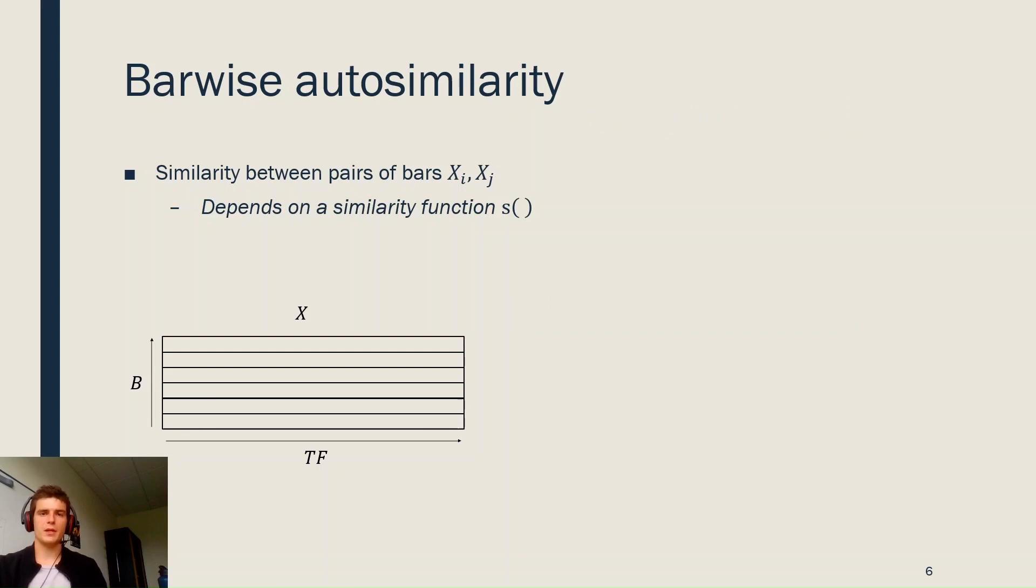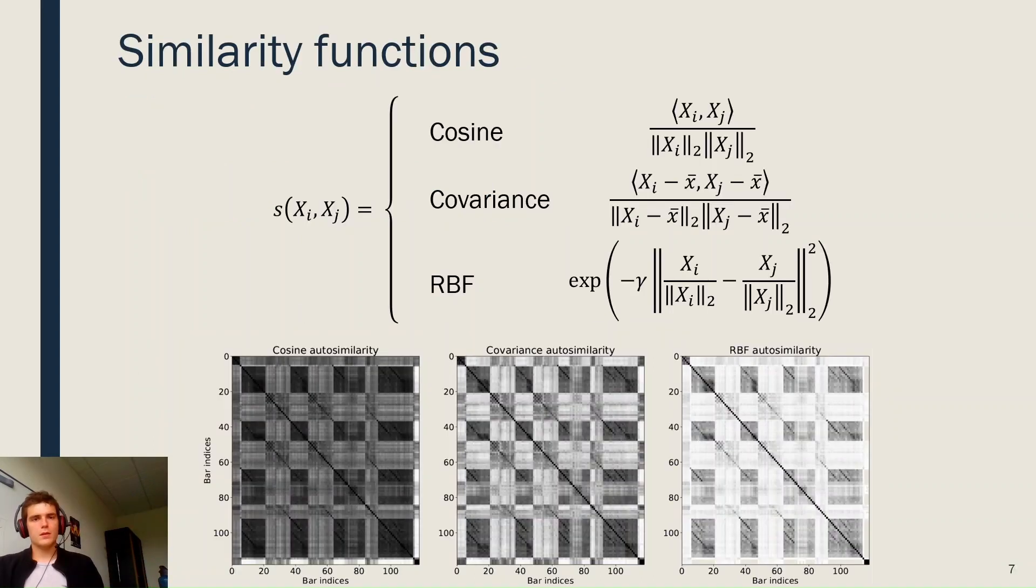From the bar-wise TF matrix X, we compute a bar-wise auto-similarity matrix A, which represents the similarity between pairs of bars in the song, and it depends on a similarity function S. In this work, we study three similarity functions: namely the cosine, covariance, and RBF for radial basis function. Examples of auto-similarity matrices with each of these similarity functions are presented below.